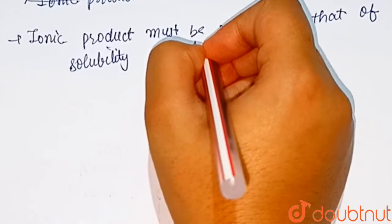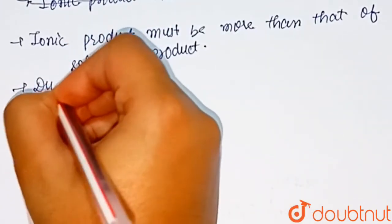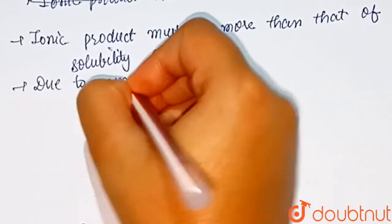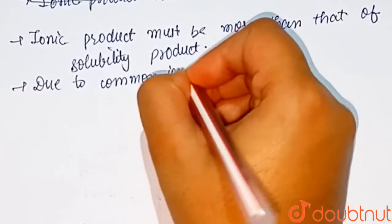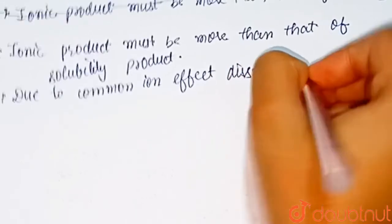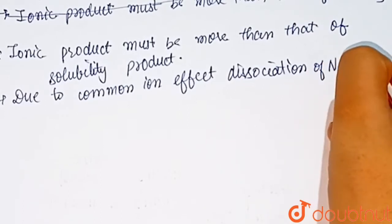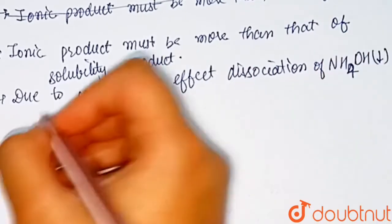So when ammonium chloride and ammonium hydroxide are added to a solution, due to common ion effect, dissociation of ammonium hydroxide decreases. It produces